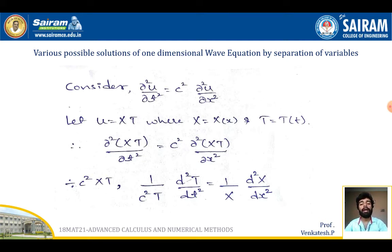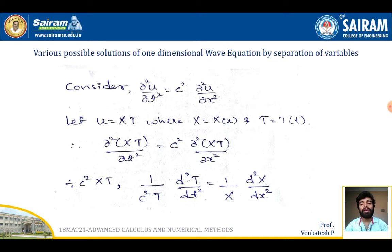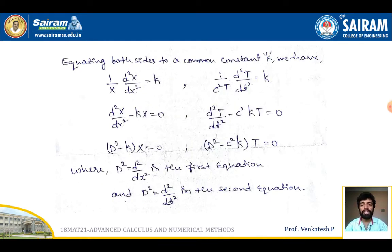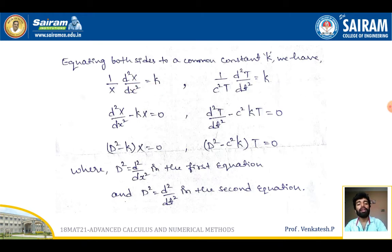I am going to divide the complete equation by c²XT. I will get (1/c²T) · d²T/dt² = (1/X) · d²X/dx². To find the solution, I am converting the partial derivatives into ordinary derivatives. Now I equate both sides to a common constant k, giving: (1/X) · d²X/dx² = k and (1/c²T) · d²T/dt² = k.